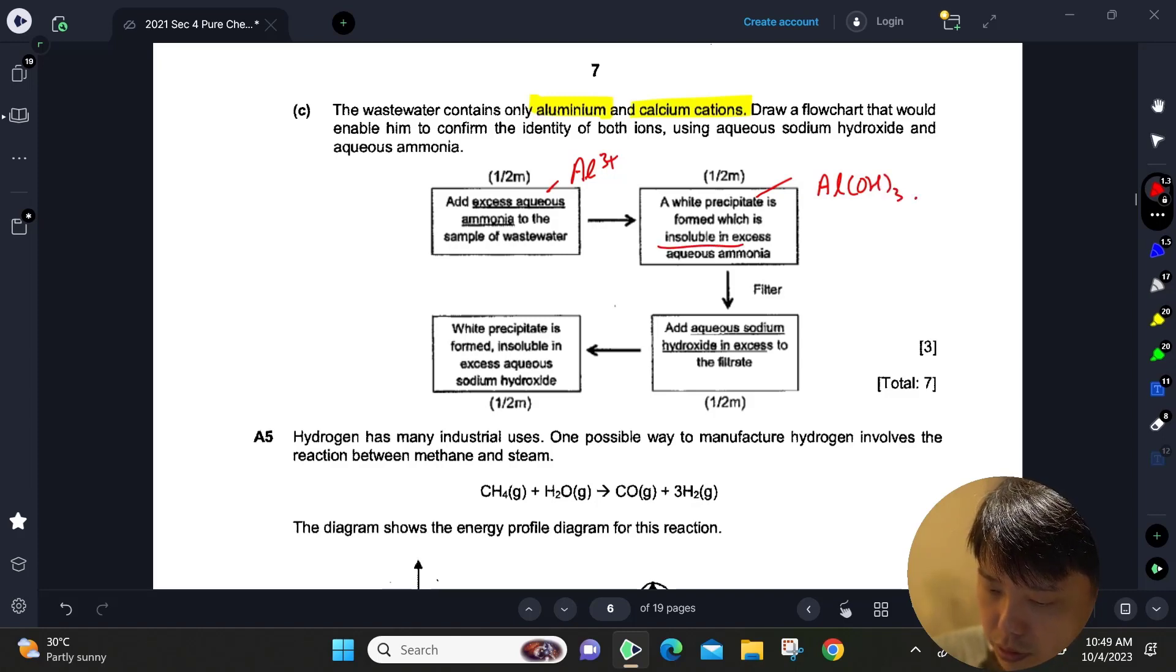Second thing, you add sodium hydroxide to test for Ca²⁺ because you then form calcium hydroxide, which is a white precipitate insoluble in excess sodium hydroxide.